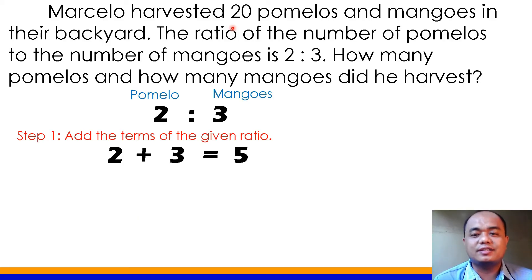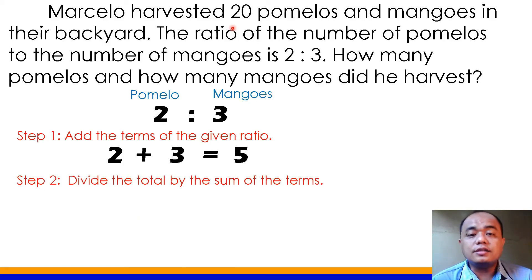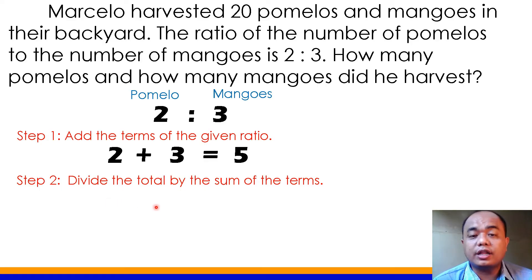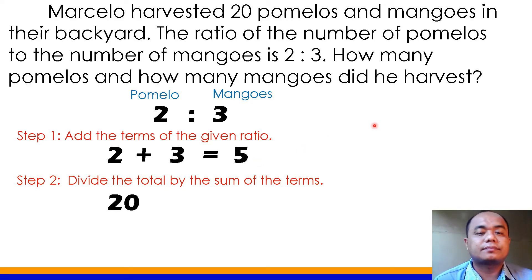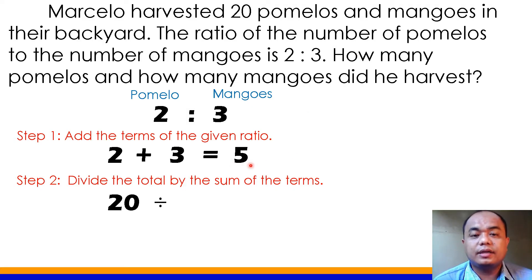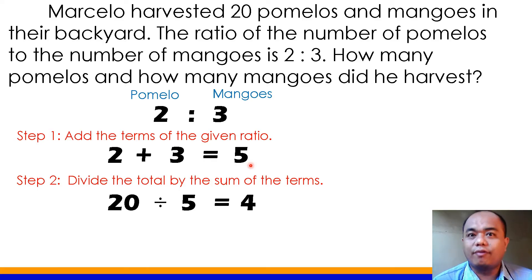Let's move on to the second step: divide the total by the sum of the terms. Hahatiin natin yung whole number na 20 sa sum of terms na 5. So, 20 divided by 5 will give you 4.